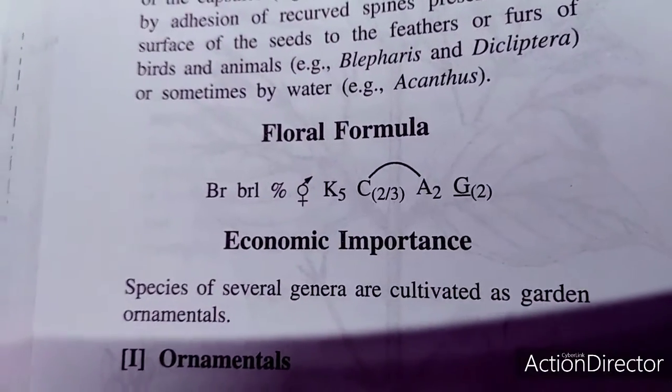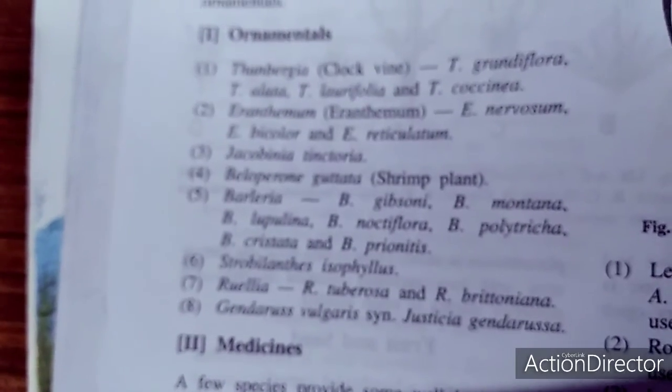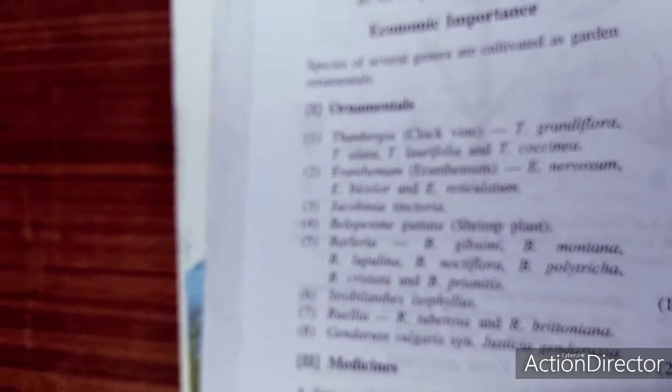This family is used both as ornamental and medicinal plants. Ornamental examples include Thunbergia, known as the clock vine, Eranthemum, Jacobinia, Beloperone, Strobilanthus, Ruellia, and Crossandra.